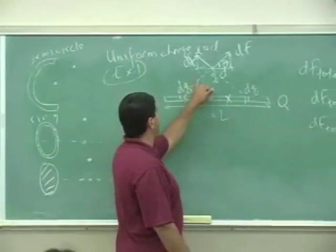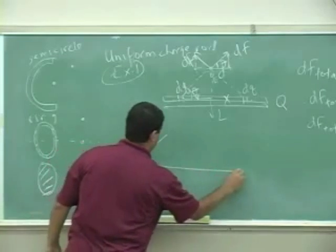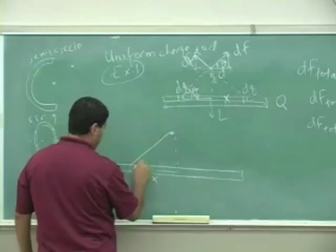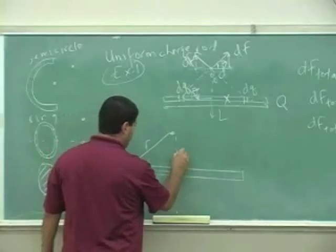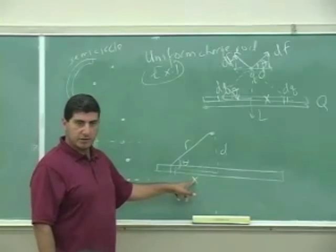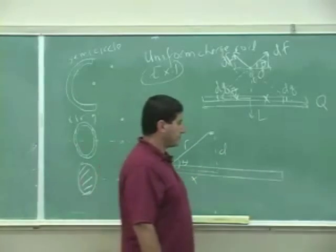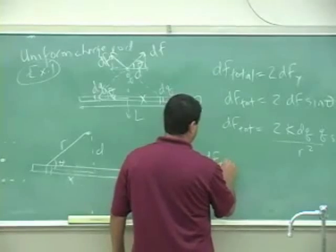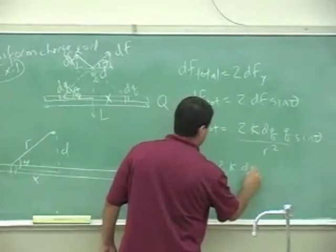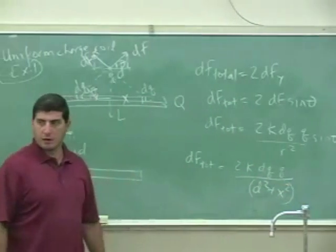And now r squared, that's the distance between them. Here's the point charge, here's that, here's x, here's theta, here's r, here's d. The idea is to express the r in terms of the distance x. So r squared is going to be d squared plus x squared.